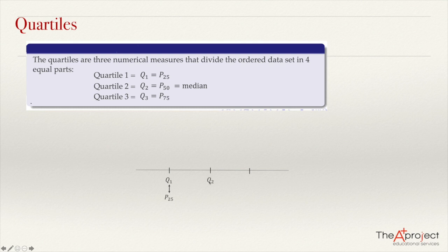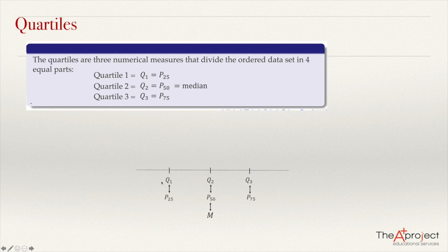Here in the center of the data set we have the median. So quartile 2 will be the same as percentile 50, or the median. And finally, we have the third quartile, or quartile 3. The 75% of the data set is below quartile 3 — at most 75% of the data set is below quartile 3. And at most 25% of the data is above Q3.